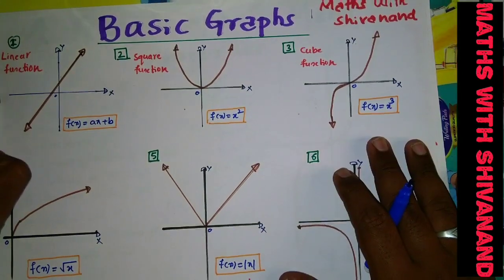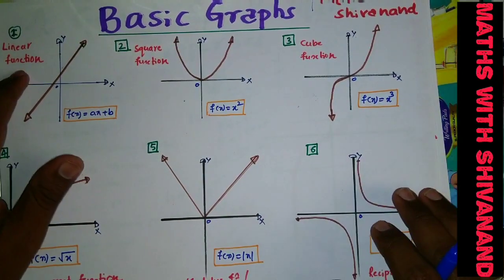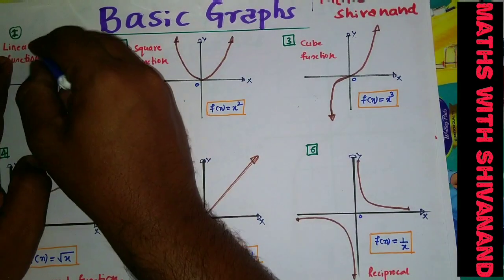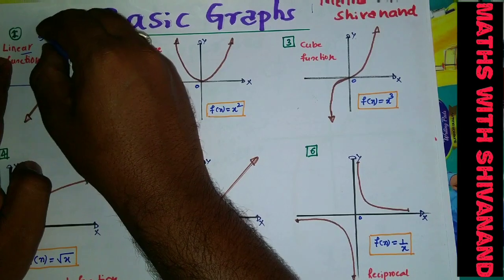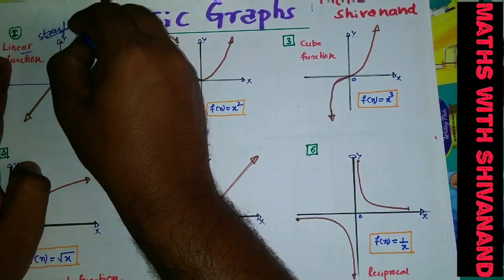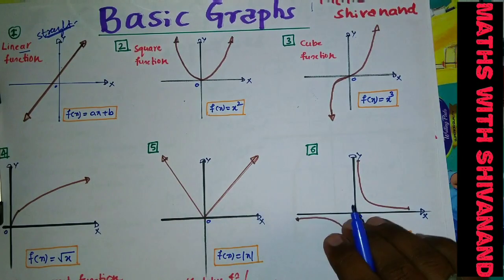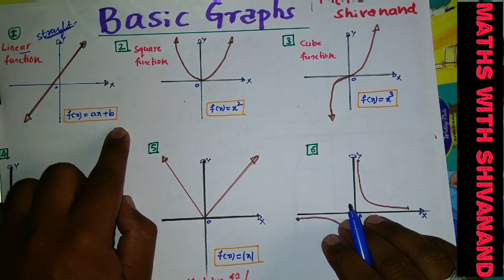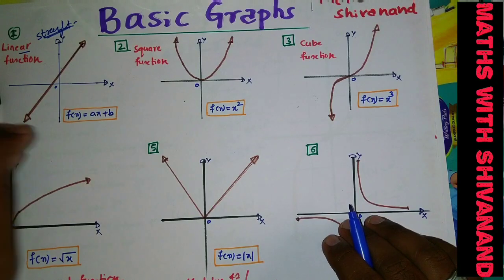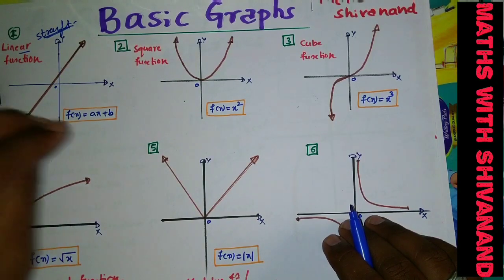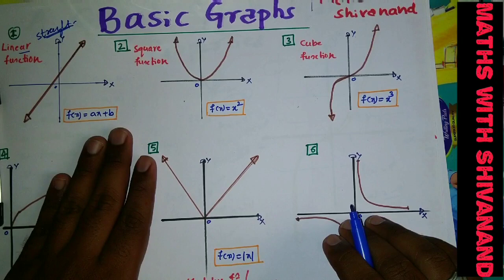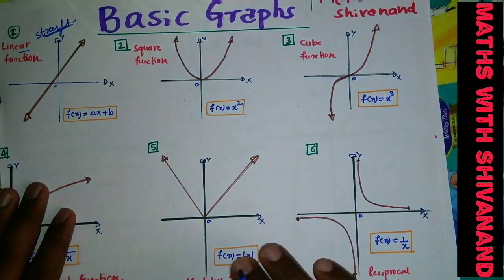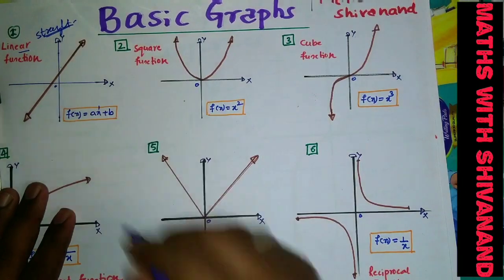So let us start with our basic graphs. Graph number one is a linear function. Whenever the word 'linear' comes, it is always in the form of a straight line. So f(x) is equal to Ax plus b — that is the algebraic interpretation. Any polynomial in the form f(x) = Ax + b always represents a linear function, with the power degree equal to 1.